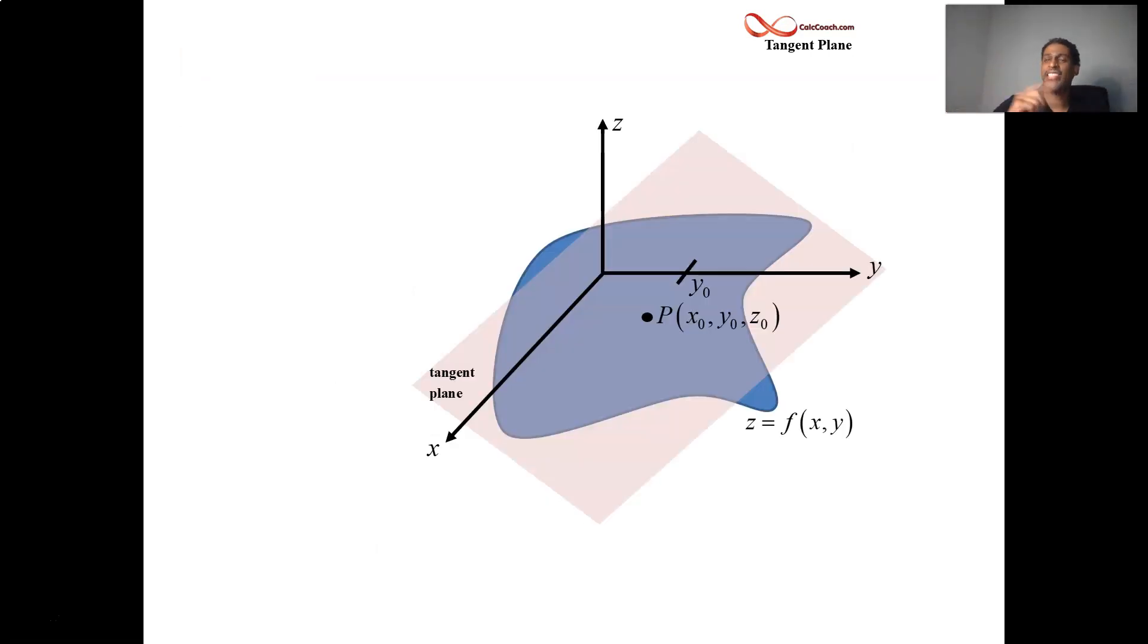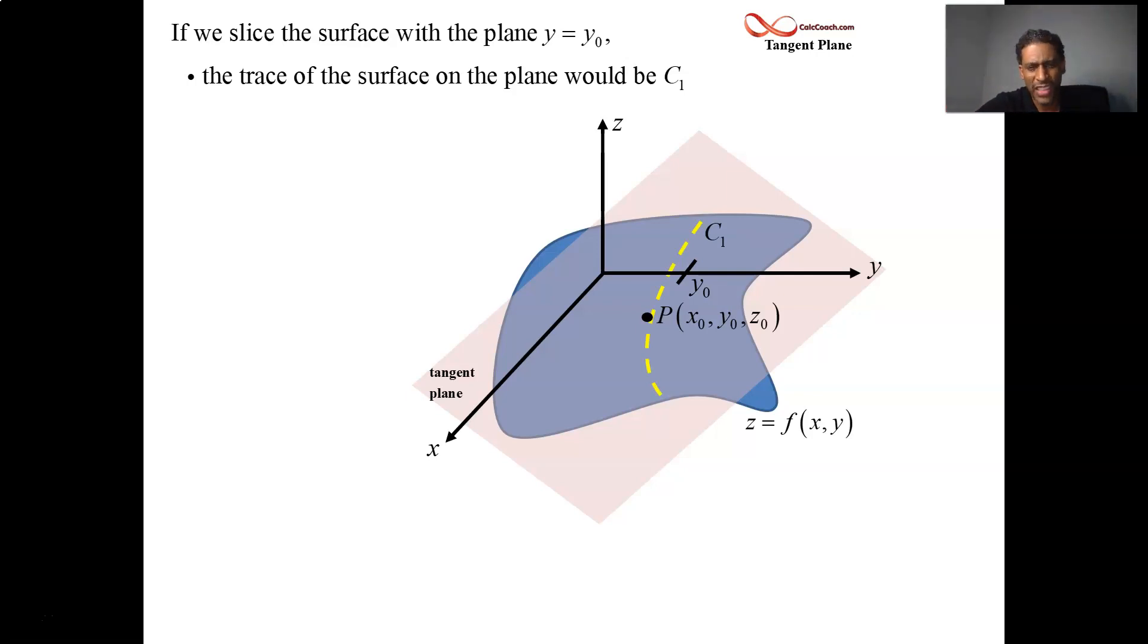We have a surface, z is a function of x and y, explicitly defined function. We have a tangent plane at a point (x₀, y₀, z₀). What we're going to do is slice this surface with the plane at y = y₀. We get this curve of intersection—call the curve C₁. It goes through the point P. Tangent to that curve, we're going to call this line T₁. T₁ lies inside of the tangent plane and T₁ is also on the plane y = y₀.